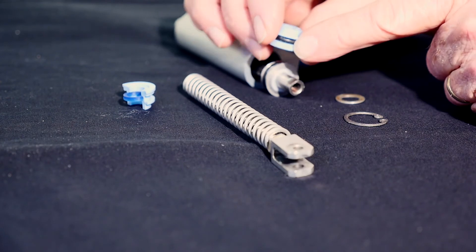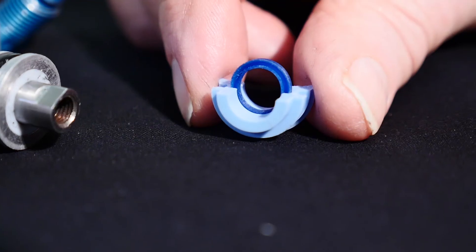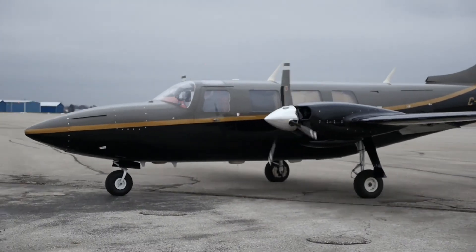We have never made a Thor seal this small before being asked by the Bonanza Baron maintenance people to develop a seal for their master cylinders. Once we've done it for the Bonanza, time for the Aerostar.